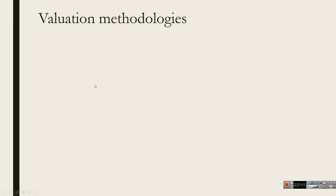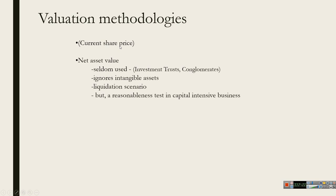There are four main valuation methodologies. The first is market price — if the company is listed, we immediately know what the market thinks. The equity is worth the current share price times the number of shares. That doesn't mean it's right; sometimes the market gets it wrong and it might be a buying or selling opportunity. But if you have that number, you shouldn't ignore it — it's probably the most accurate fix on what the market thinks the share is worth.